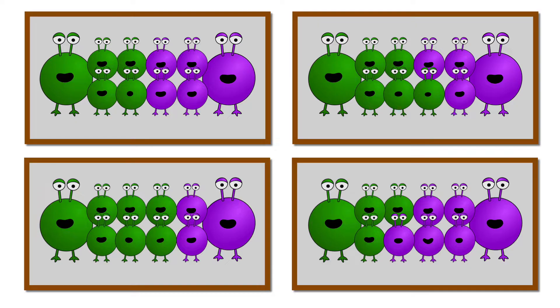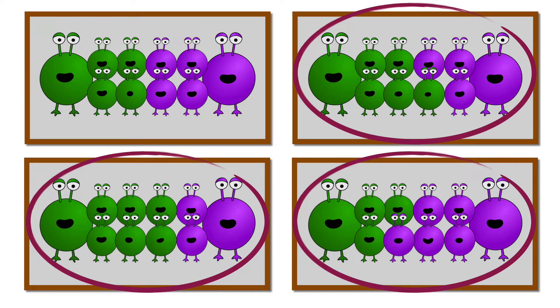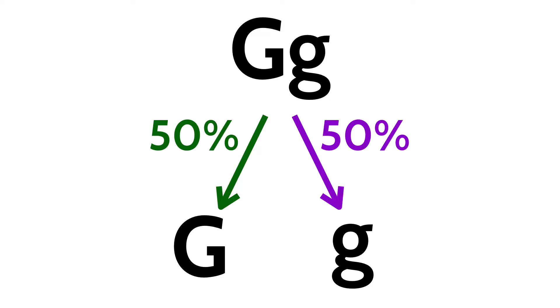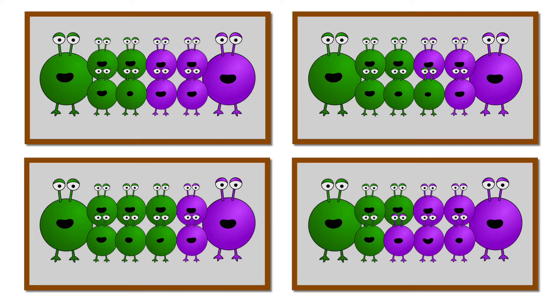Now, in any given alien family, you might see a little more or a little less than half and half. But since the chance of getting one or the other is always 50-50, on average, you'll see the proportions outlined in the Punnett square.